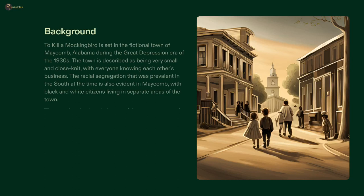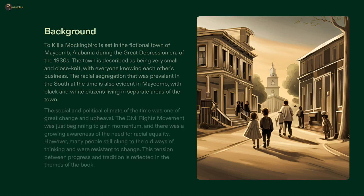Slide 3 of 22 contains the background information of Harper Lee's classic novel To Kill a Mockingbird. It takes place in the fictional town of Maycomb, Alabama during the Great Depression. The town is small and close-knit, but the deep racial segregation of the South is still present.